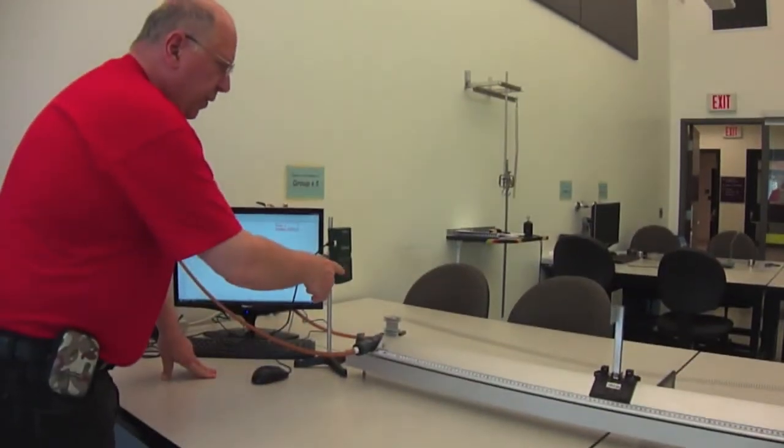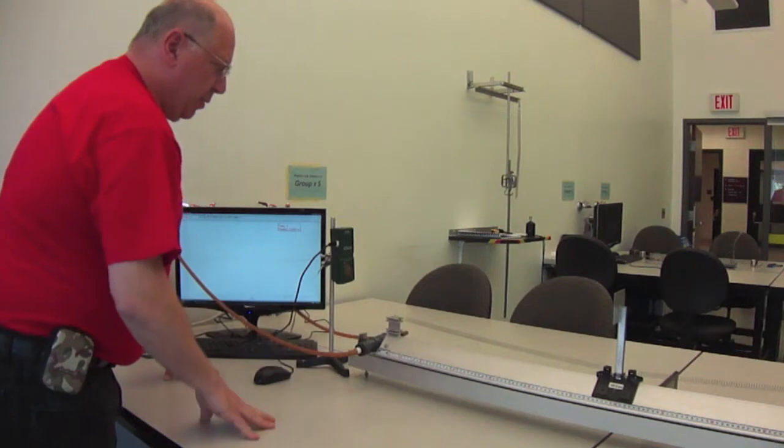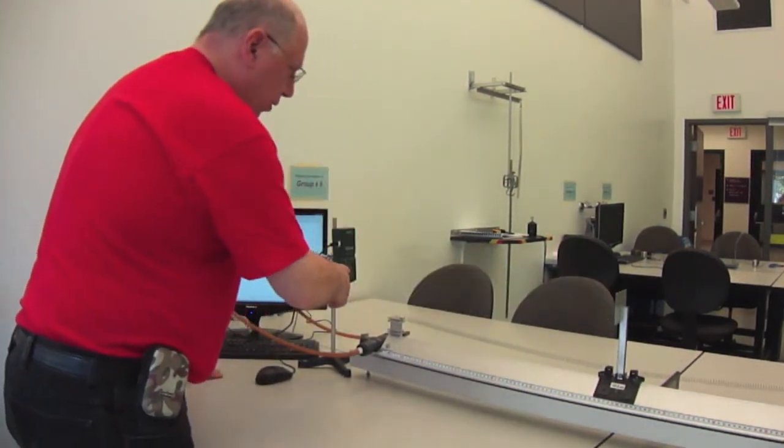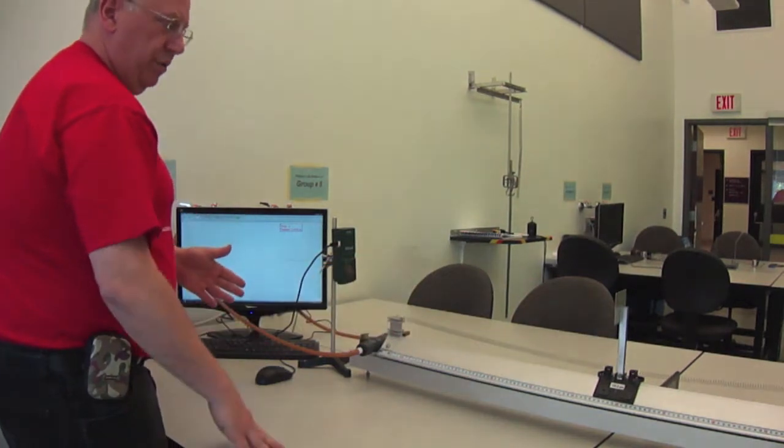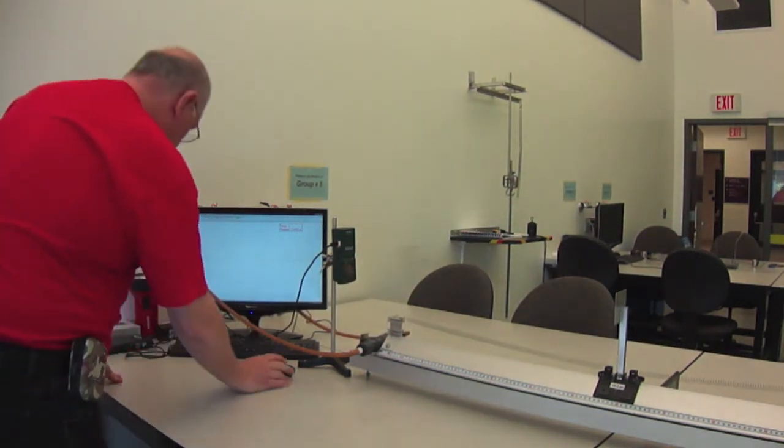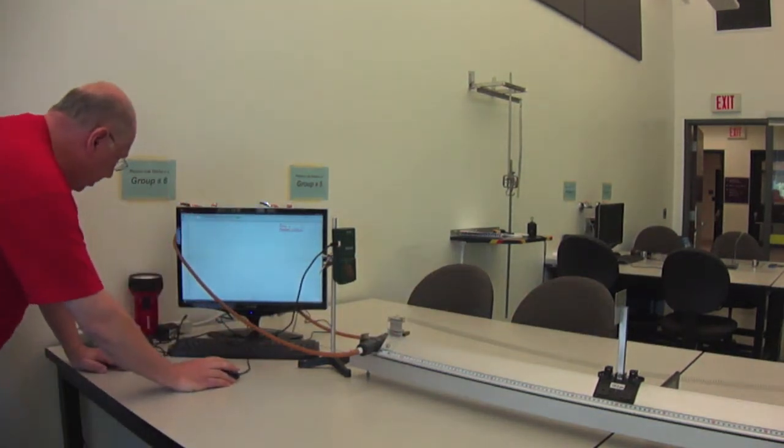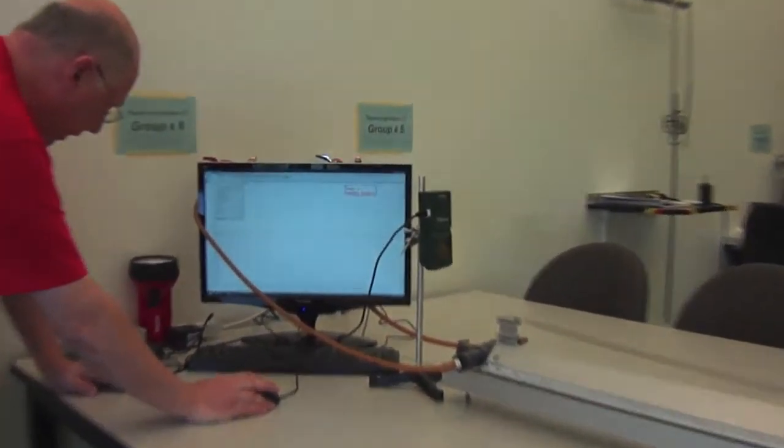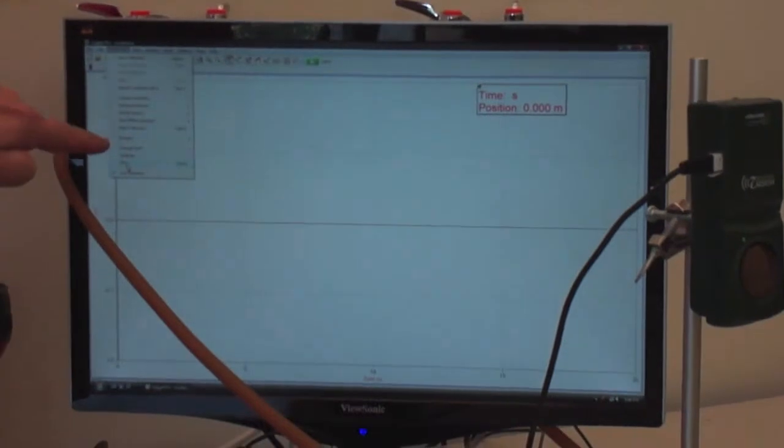Now, before we actually begin the experiment, we have to set this distance of the glider from the sound probe to be equal to zero. So, what you are asked to do in the lab manual is click on experiment and then click on this option that says zero.